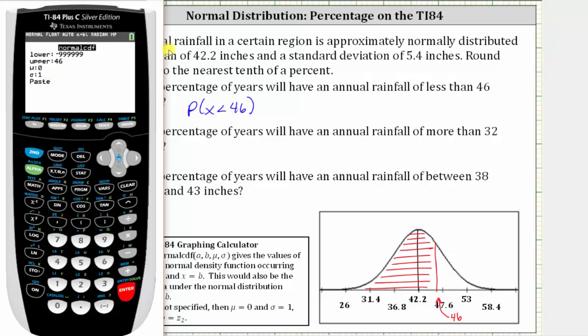Mu is 42.2, the mean. Enter. And sigma, the standard deviation, is 5.4. Enter. And we press enter again on paste, which brings the information to the home screen.